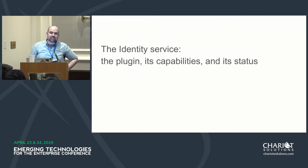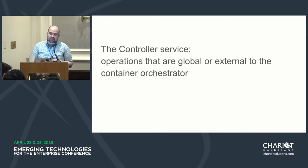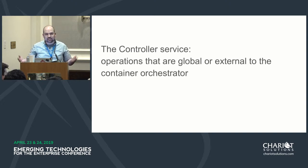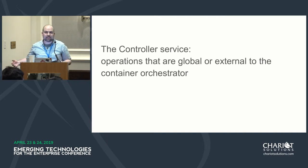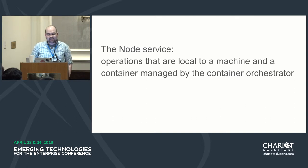The identity service tells the Container Orchestrator the name of the plug-in, what it can do in terms of storage, and its current status. The controller service performs operations that are global to or external to the Container Orchestrator. Sometimes you don't have anything external, and CSI is very flexible in that regard. The node service performs operations that are local to a machine and a container managed by the Container Orchestrator.